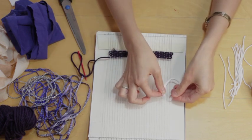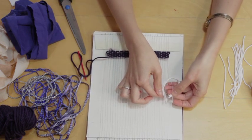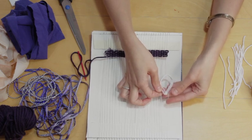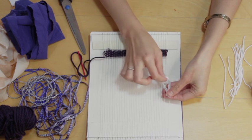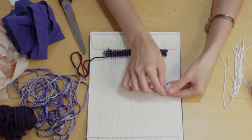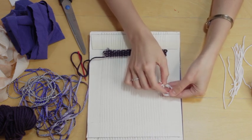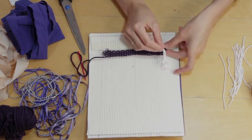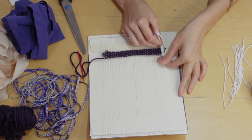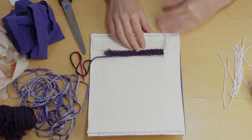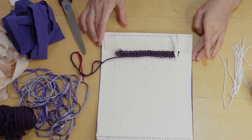So working away from yourself, using two of the warp threads, take the ends and push them up in between those two warp threads. This is a little bit fiddly. I'm going to pull them up through, take hold of the loop at the other end, push those ends through, and pull that down on top of my plain weave. So there's your first tassel.